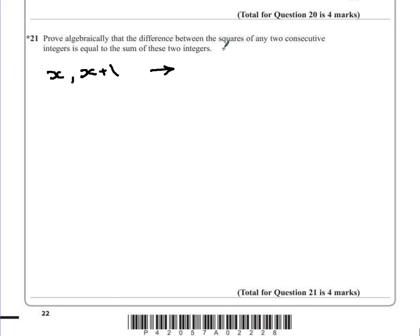So the difference between the squares of these: we have x squared—actually, you probably want to get the bigger one first. So we have (x+1)² take away x², because that's the second number squared take away the first number squared.